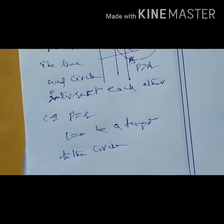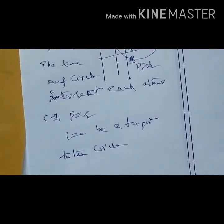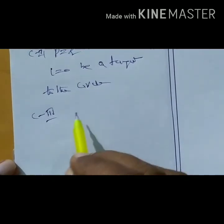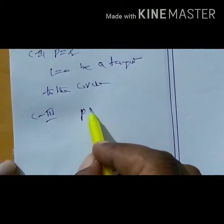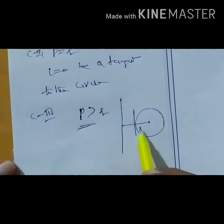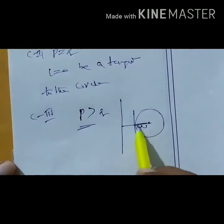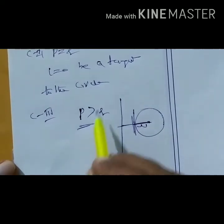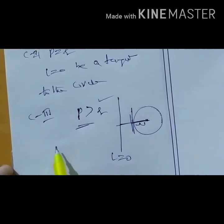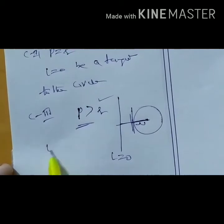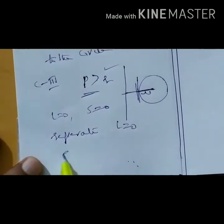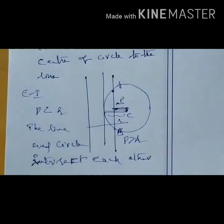In case three, the perpendicular distance p is greater than the radius. This means the circle and the line exist separately — the line does not intersect or touch the circle. They are separate from one another; line L = 0 and circle S = 0 are separate from each other. These are the three possible cases for a line and a circle.